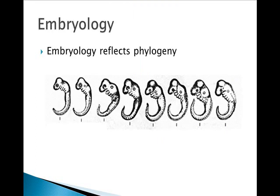Embryology is another area of evidence for evolution. The saying is that embryology reflects phylogeny. Phylogeny is the evolutionary history of a particular species, and you can kind of see the stages through which it went as a species in order to come out to what it looks like today. On this slide, we have a bunch of different vertebrates: a salamander, a human, a pig, a chicken, a cow, a turtle, a fish, and a rabbit.